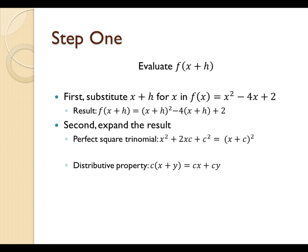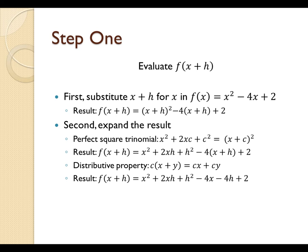When we use the definition of a perfect square trinomial, we can see that the x plus h squared easily expands out to x squared plus 2xh plus h squared. And when we use the distributive property, we can see that the negative 4 times x plus h distributes to negative 4x and negative 4h.